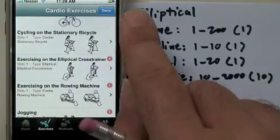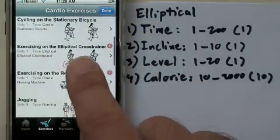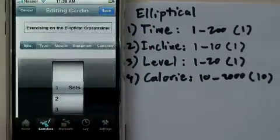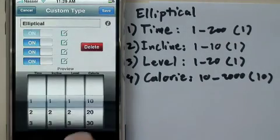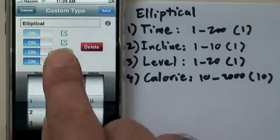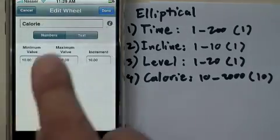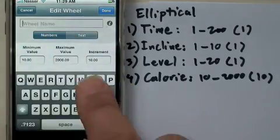I find my elliptical which is here. I press edit. Now I can go to types. I have the elliptical. I press edit on the type. We want to change the fourth wheel from calorie to intensity.